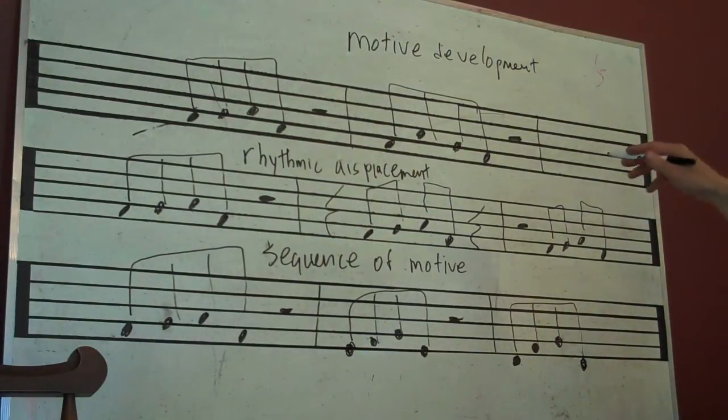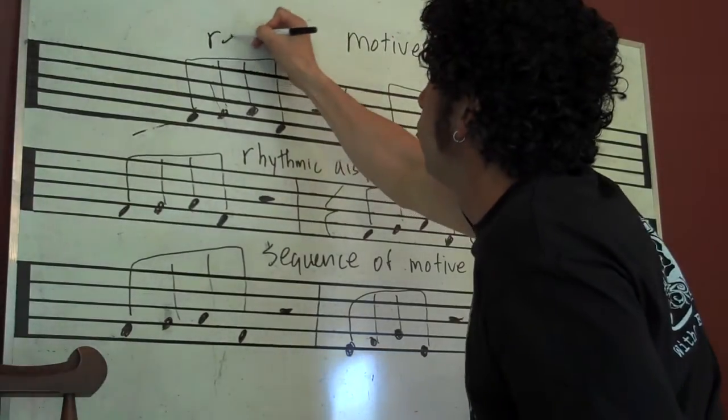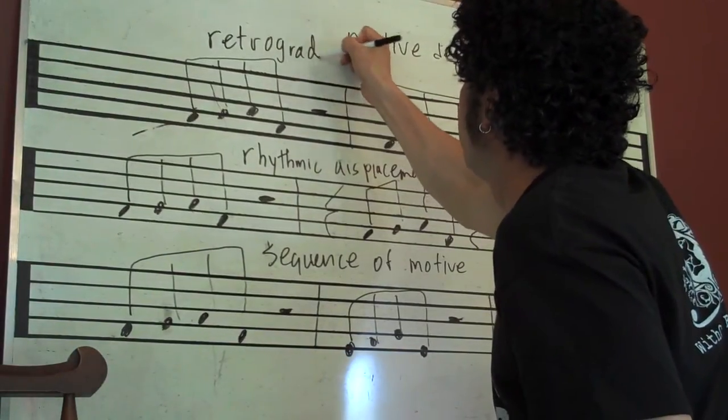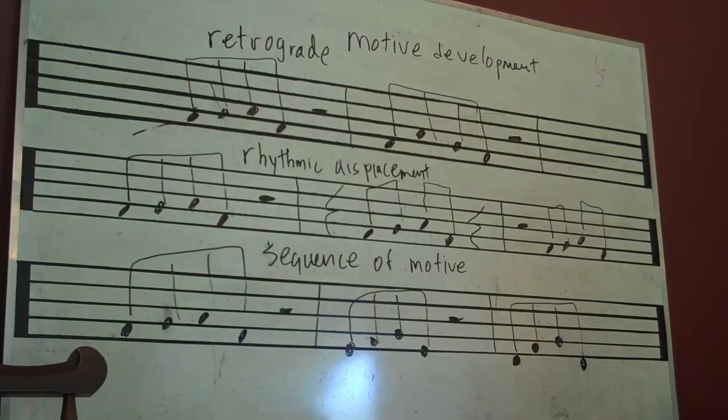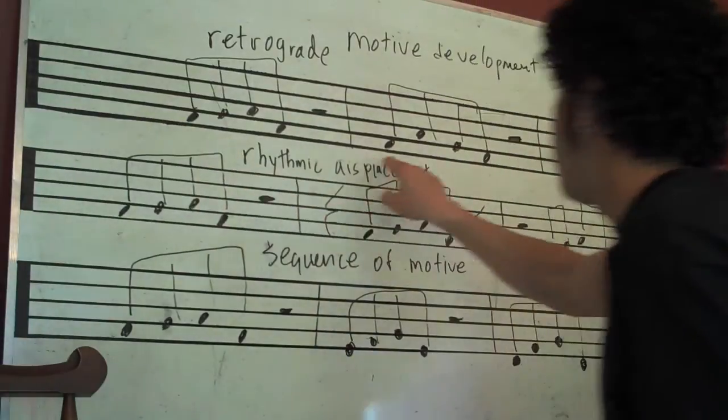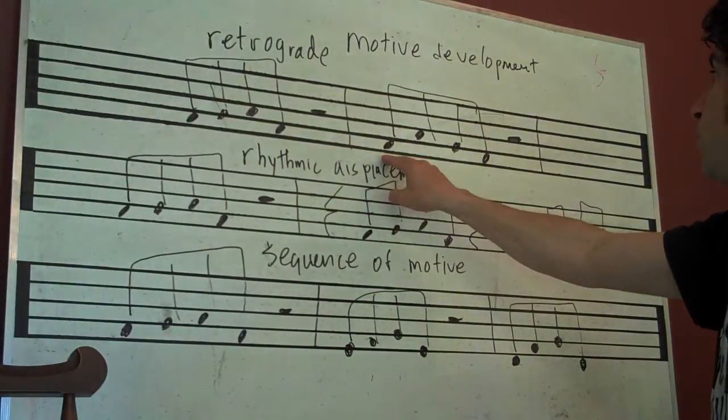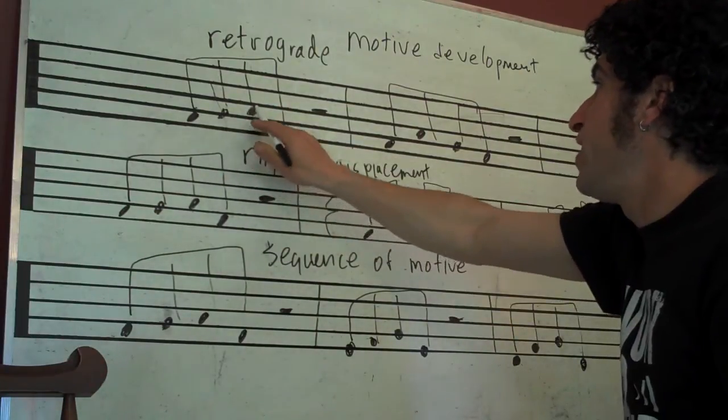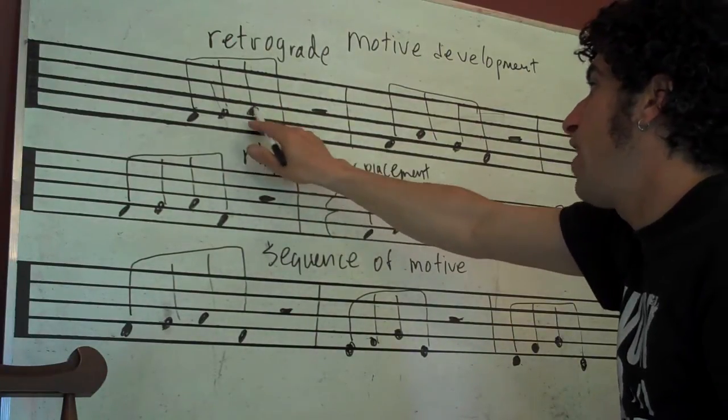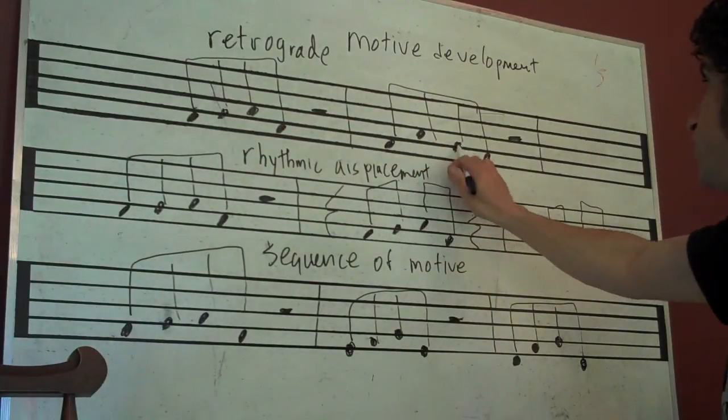This one is retrograde. So what's going on here? We've got our same line, and then we've got retrograde. So what's happening? We've got our same line, and then here we're just, retrograde is just working backwards. So we've got F, G, A, F, and then F, A, G, F. F, A, G, F. That's what retrograde is.